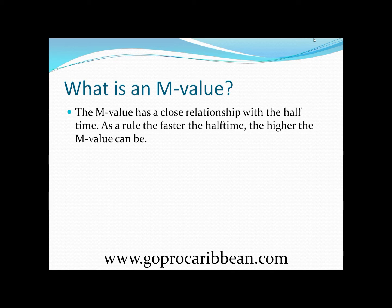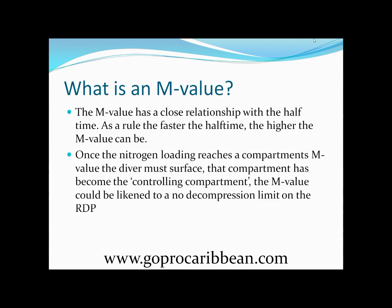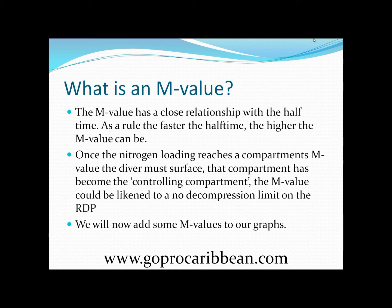The M value has a very close relationship with the half time. As a rule, the faster the half time, the higher the M value can be, so fast compartments will have higher M values than slow compartments. Once the nitrogen loading reaches a compartment's M value, the diver needs to surface — that compartment has become the controlling compartment. The M value could be likened to a no-decompression limit on the RDP, and the different M values are the reasons for the different decompression limits. We're going to go back to the animated charts and add M values to them.